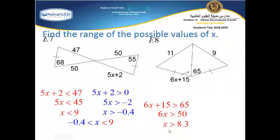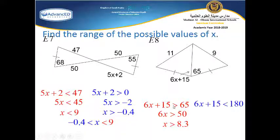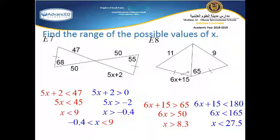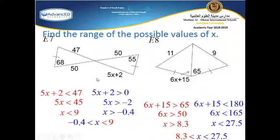For the last part, the angle opposite to side 11 is bigger than the angle opposite to side 9, so 6x + 15 > 65°. Solving: 6x > 50, x > 8.3. For the upper bound: 6x + 15 < 180, so 6x < 165, x < 27.5. Therefore the possible values of x are 8.3 < x < 27.5. Thank you for listening and have a nice day.